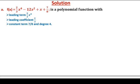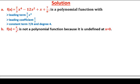The term with the highest exponent is the leading term, and the highest exponent is the degree of the polynomial. The coefficient of the term with the highest exponent is the leading coefficient. The second example: f(x) = x/x. This is not a polynomial function because the domain is not the set of all real numbers — the function is undefined when x is zero.